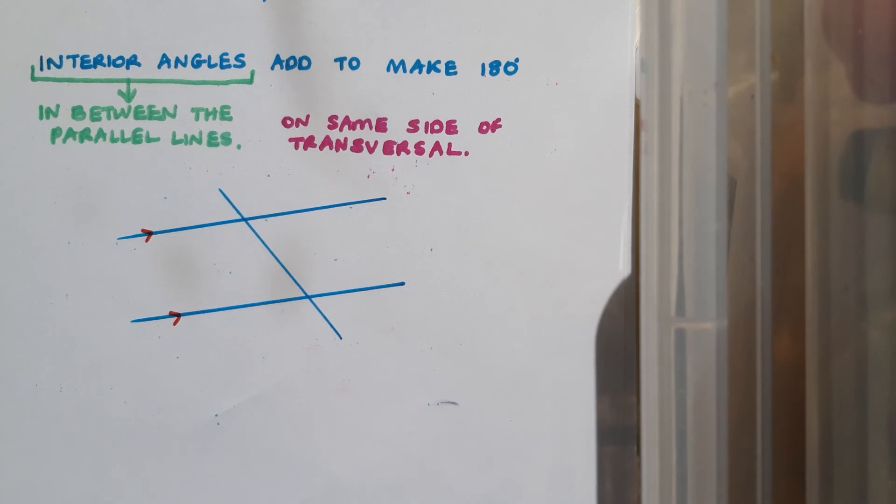So here's an example. I've got two parallel lines and a transversal. I'm going to tell you that this angle is 51 degrees and I'd like to find the size of angle a. Pause the video here and see if you can calculate this yourself.